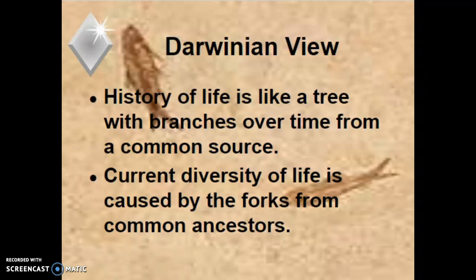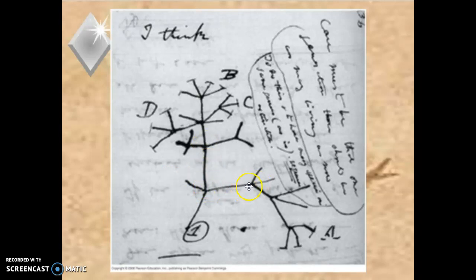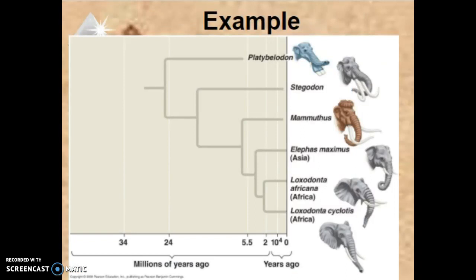He said the current diversity of life is caused by the forks from common ancestors. This is a picture from his book — the only indicator of one first life form. All life starts similarly, then some can photosynthesize, some need to consume, some can chemosynthesize, and those diverge further, leading to a huge diversity of life. A computerized version confirms that Darwin wasn't far off, based on our phenotypic observations and genotypic information.